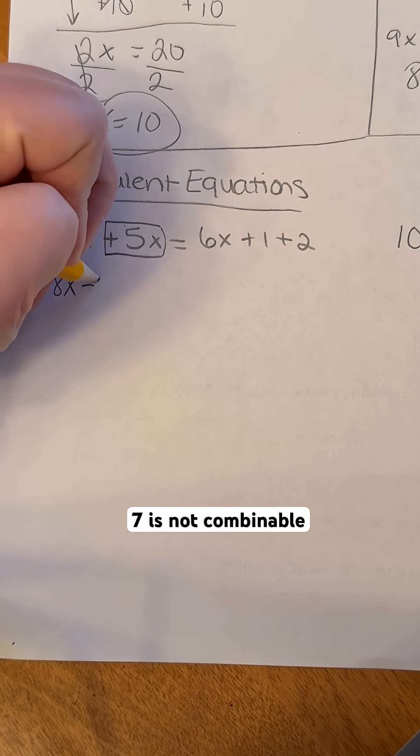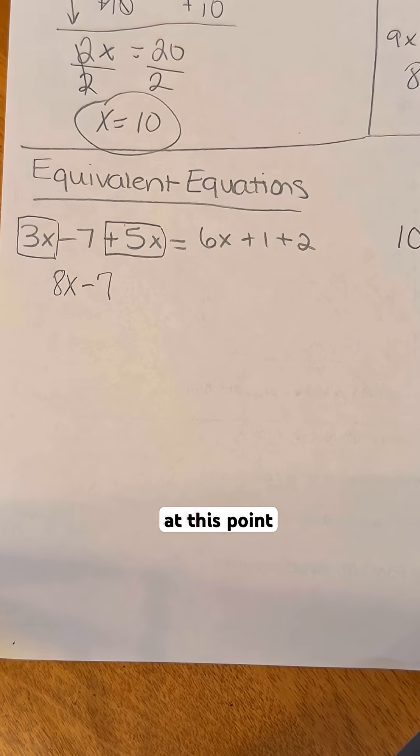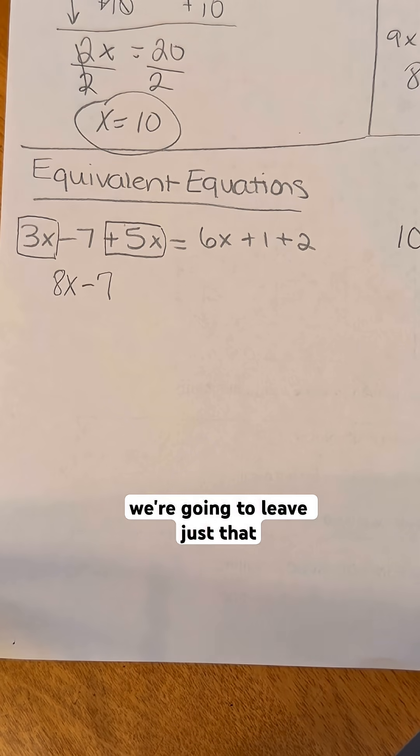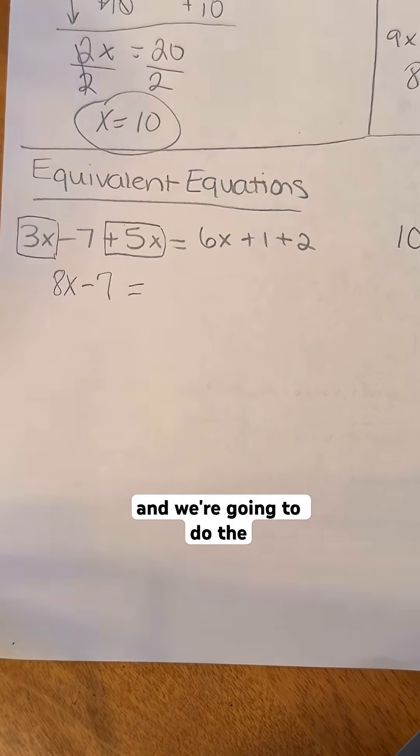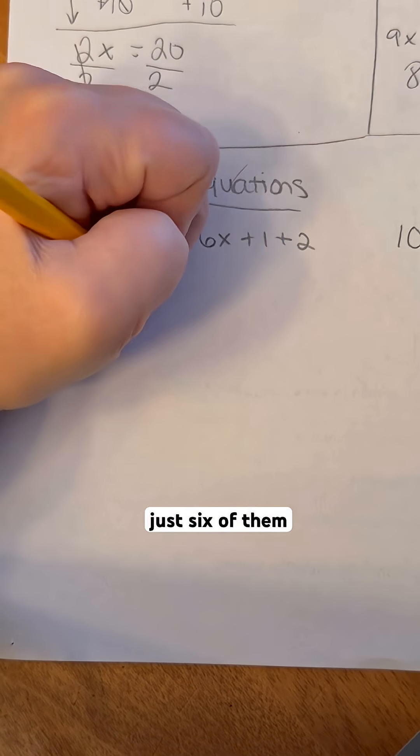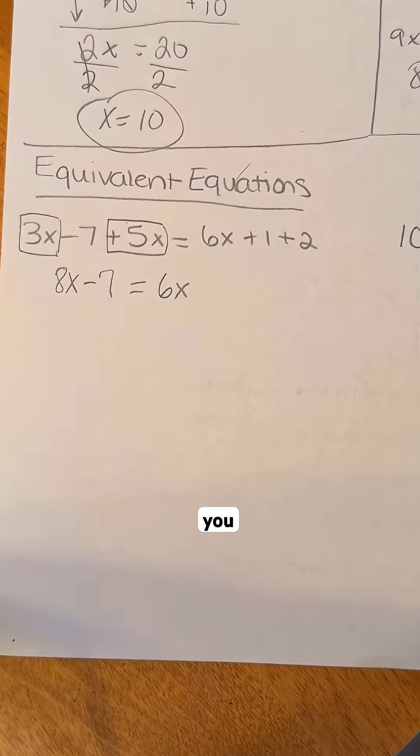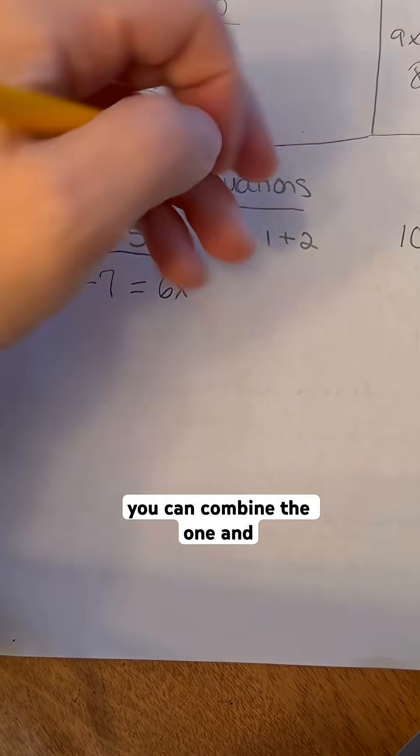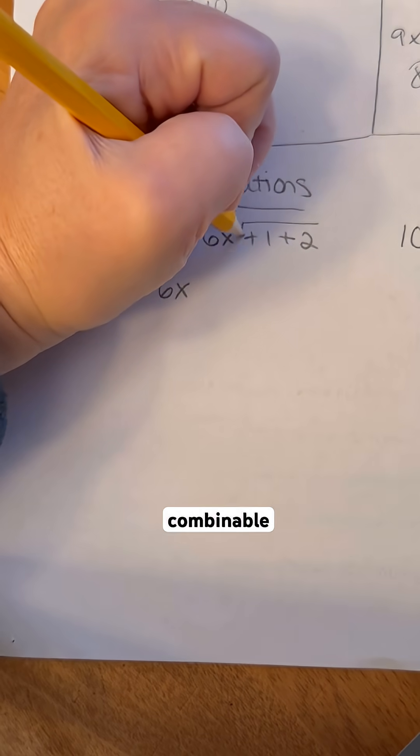Now the minus 7 is not combinable at this point with anything on that side, so we're going to leave just that. That is your simplified version on the left-hand side. Now we're going to go over to the right-hand side and do the same thing. We're going to look for like things. I see a 6x, but I don't see any other x's. So x is all by itself, just six of them. By itself, you can't combine anything, but you can combine the 1 and the 2 because those are combinable. They're constants.